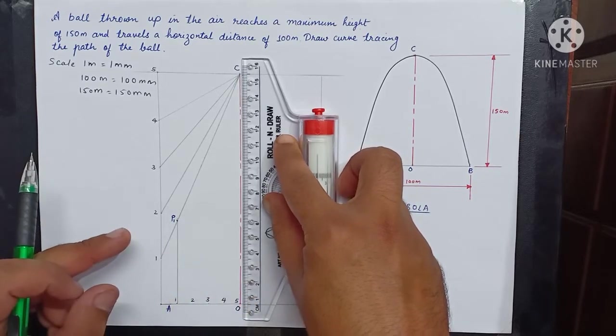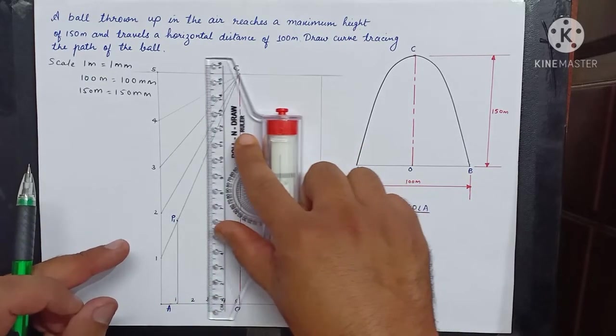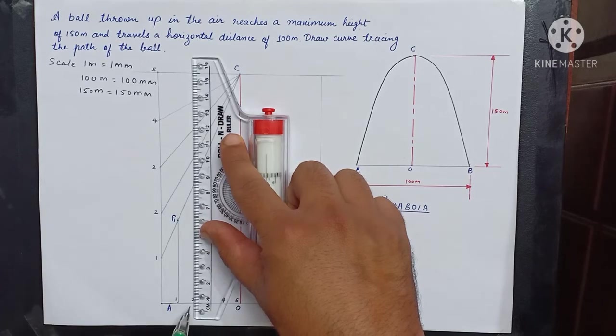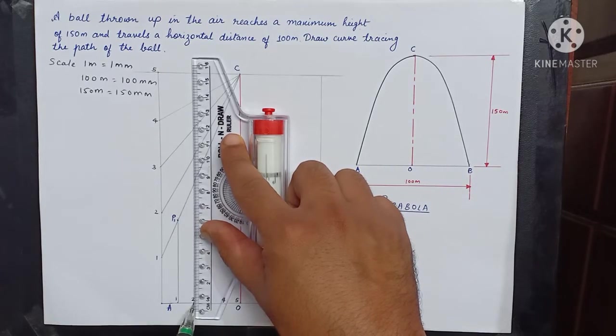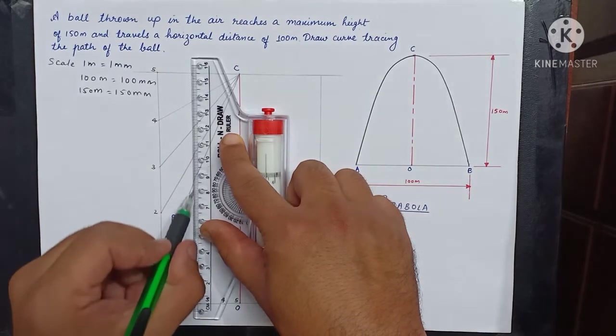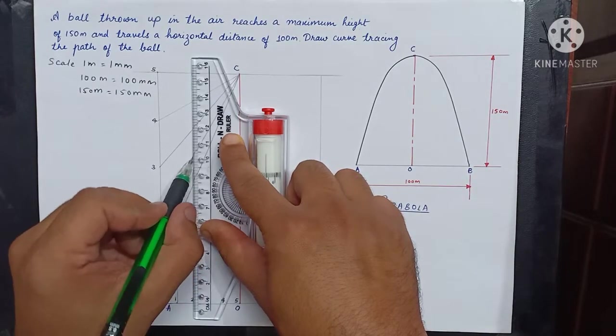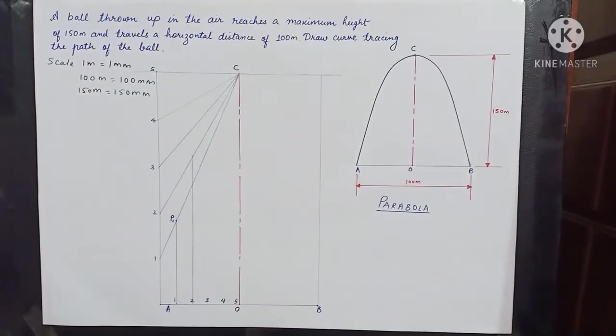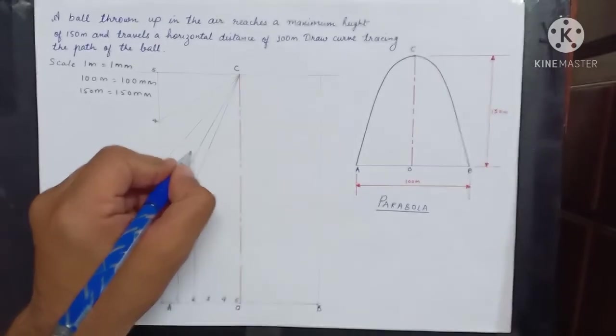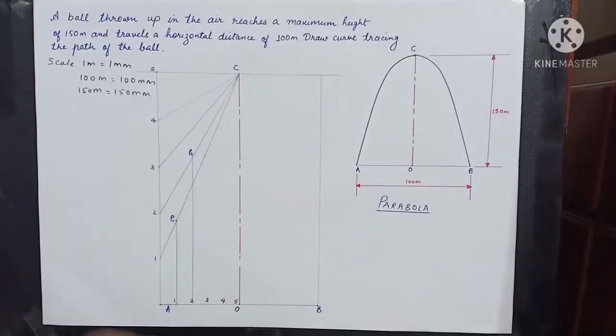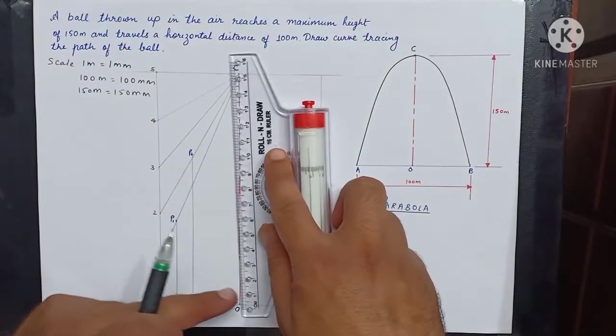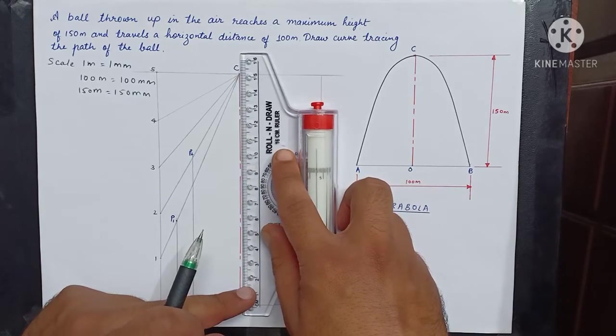Similarly, match the ruler scale with the axis. Slide it to point number two which is on the horizontal line. Draw a vertical line which will connect with line number two and this will give you point P2. Similarly for P3 and P4.